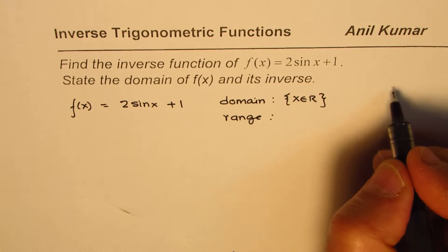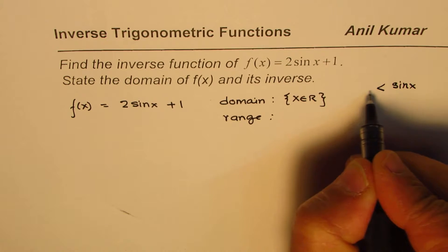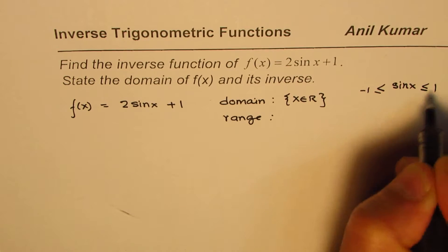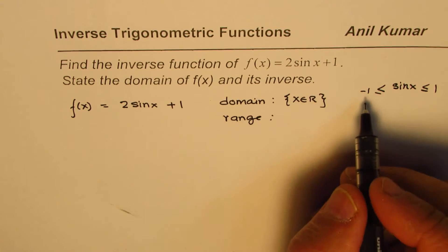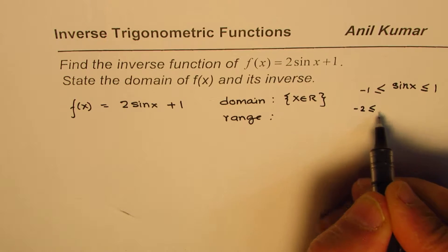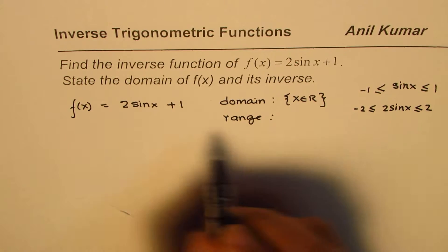Range normally for sine x, sine x will be between plus and minus 1. So, range of sine x is between ±1. So, 2sin(x) + 1 will be, we can multiply by 2, so we get minus 2, we just multiply by 2.